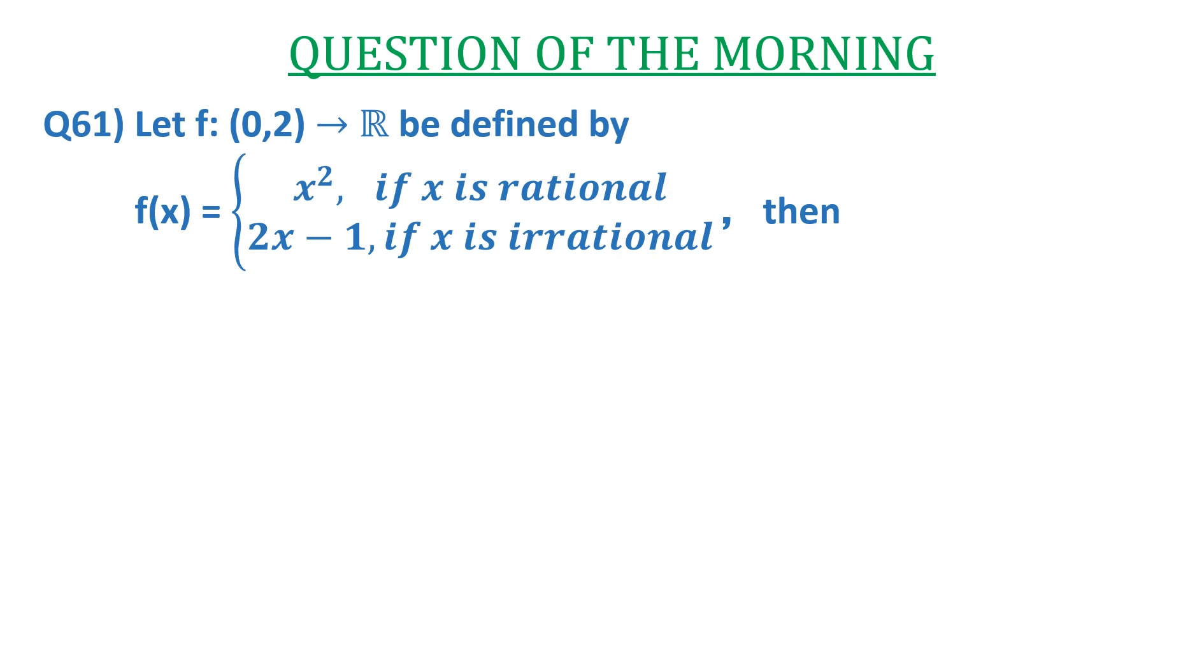Let f from (0,2) to ℝ be defined by f(x) = x² if x is rational and 2x - 1 if x is irrational.